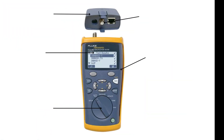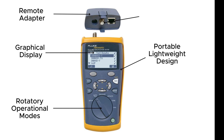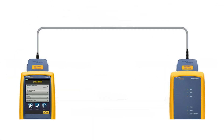The Fluke Tester has several parts. Number 1: Remote Adapter. Number 2: Graphical Display. Number 3: Rotary Operational Modes. Number 4: Portable Lightweight Design. Number 5: F-Connector and RJ45 Tests.